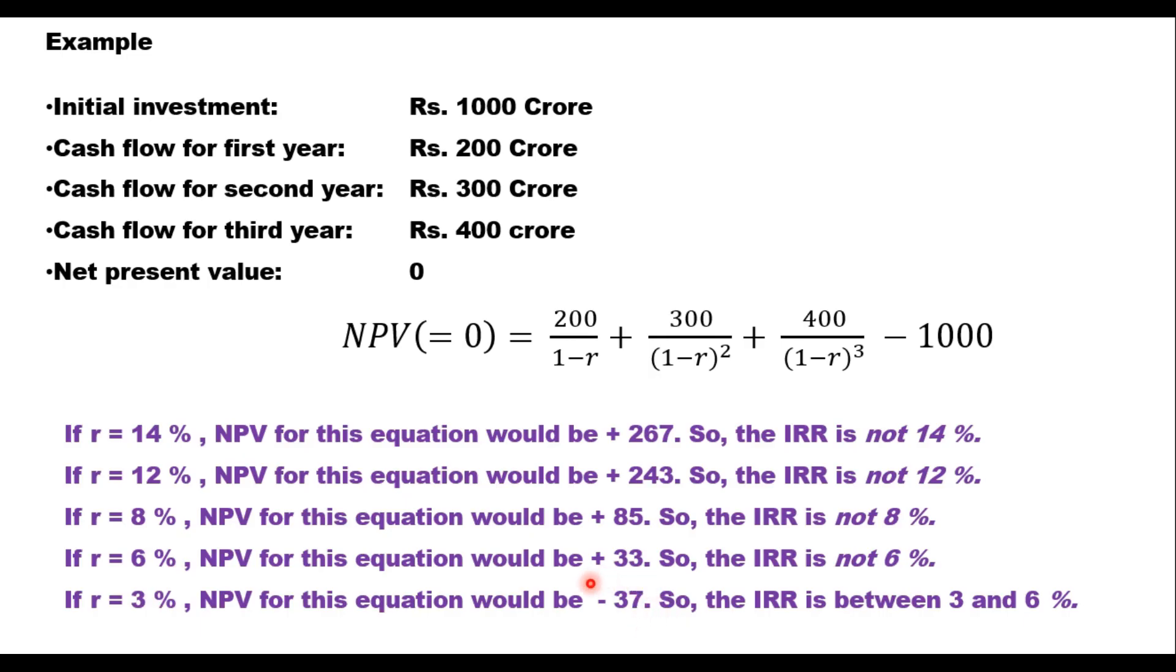So for 6 it is plus 33, for 3 it is minus 37. So actual R value will be between 3 and 6. You can try with 5, you can try with 4, 4.5 and finally you get some value of R for which this NPV is very close to 0. Now calculators are also available which can give you value of R directly.